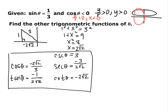Using x, y, and r, here are the other five trig functions. The big point for these problems is to draw your triangle and draw it in the correct quadrant. We knew this was quadrant two because sine was positive, meaning y is positive, and cosine was negative, meaning x is negative — that's quadrant two.